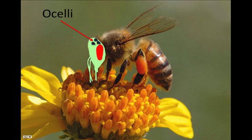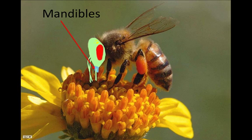Bees have three more eyes, which we call the ocelli, located on the top of the bee's head. Next, the mandibles, or the mouthparts. Bees are interesting because they have two different kinds of mouths: a chewing mandible, and a lapping or sucking labrum. It is actually the maxilla and the labrum that come together to form a complex tongue, or proboscis.